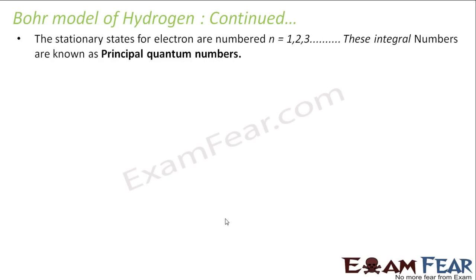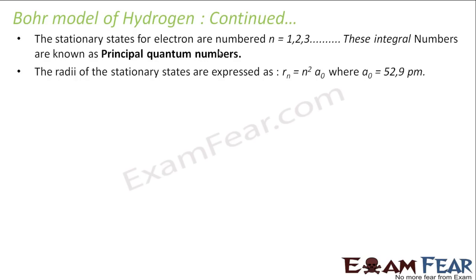The stationary states of electrons are numbered n = 1, 2, 3 and they are called principal quantum numbers. This is the only quantum number required in the Bohr model to uniquely define an orbit. Bohr also derived the formula to find the radius of the orbit: R = n²a₀, where a₀ is 52.9 pm.